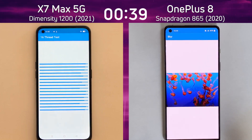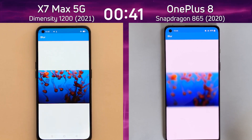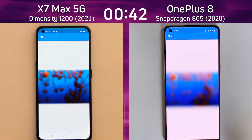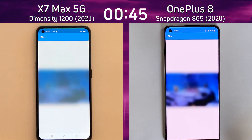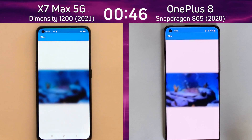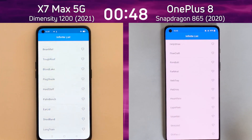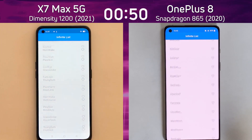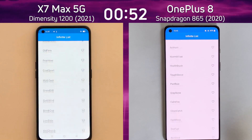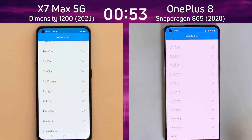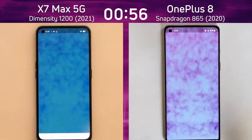Coming up next is the blur test — the beginning of the mixed CPU/GPU part of SpeedtestG. Both of them are now into the blur test. Which one's going to be first out into the next one? That was pretty neck and neck, but I think the lead is still being maintained slightly by the OnePlus 8.